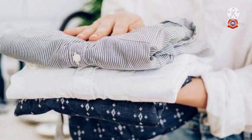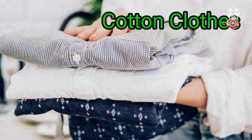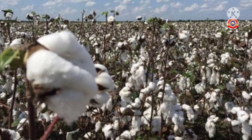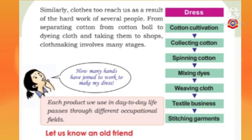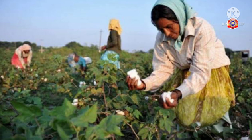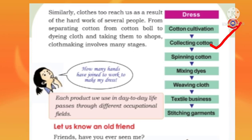My dear children, look at the picture. Do you know which type of clothes are these? Yes, these are cotton clothes. From where do we get cotton? We get cotton from cotton plants. So the first step of making cotton clothes is cotton cultivation. When the cotton plants are fully grown, we collect cotton from them. Collecting cotton is the second step.